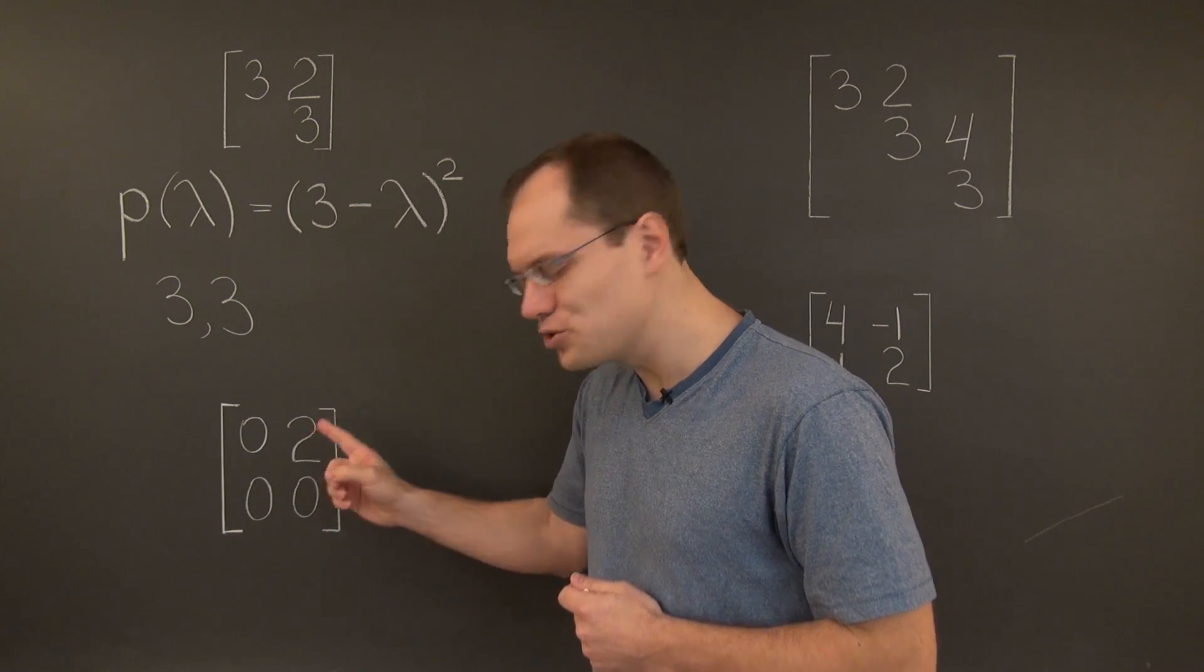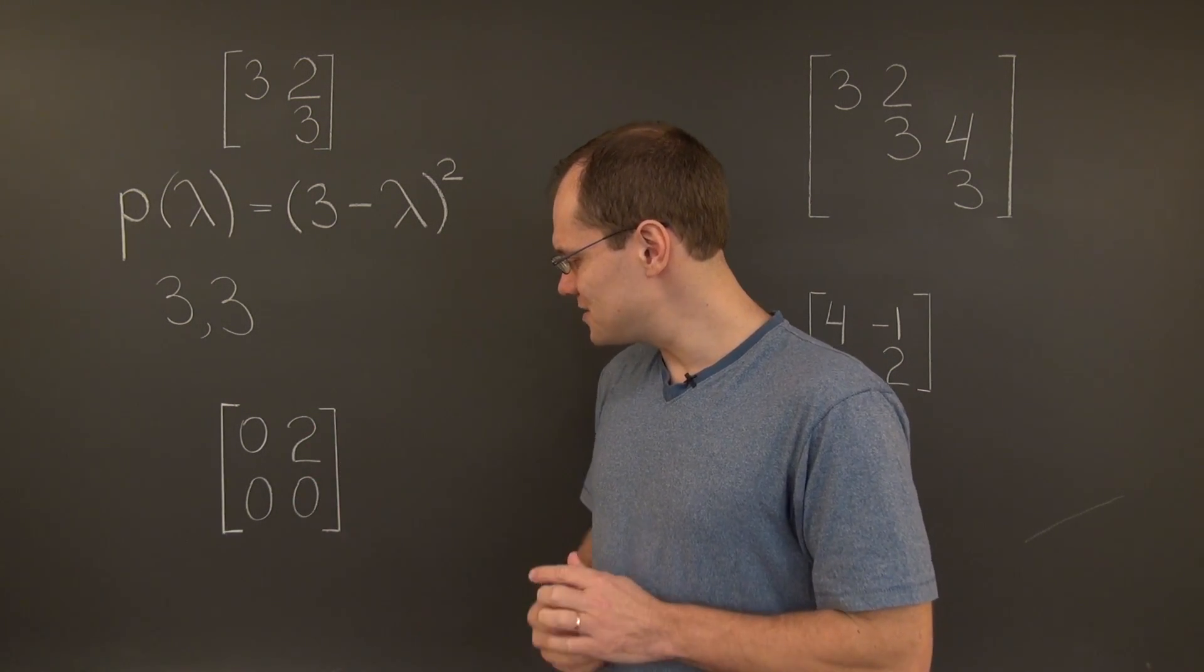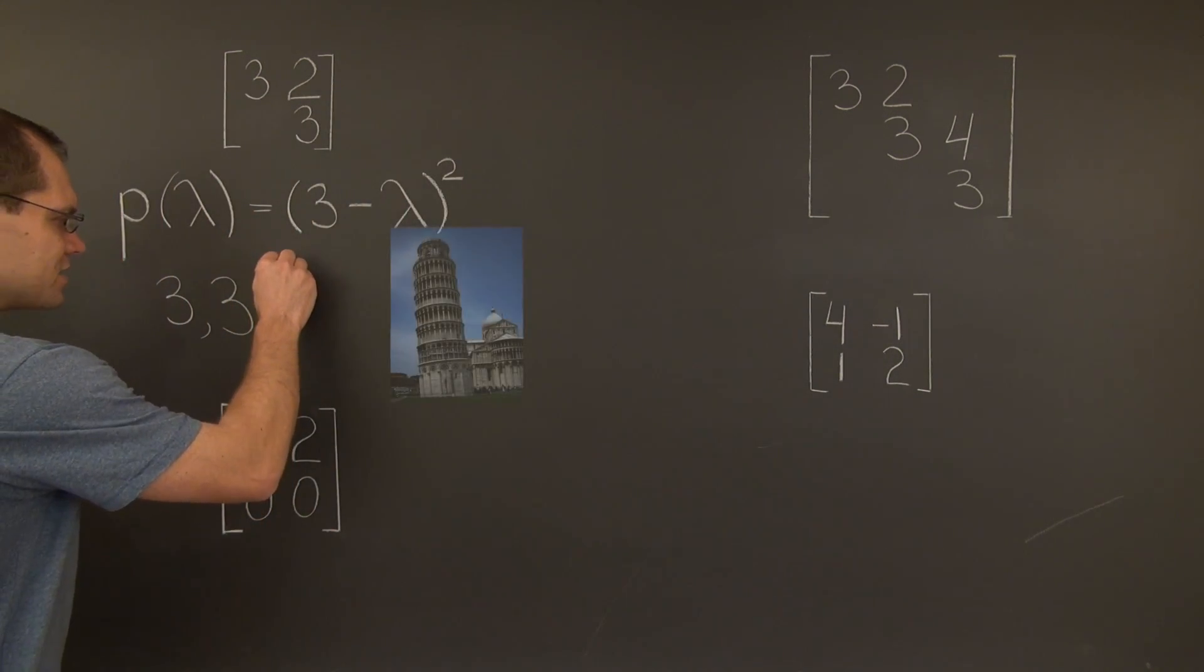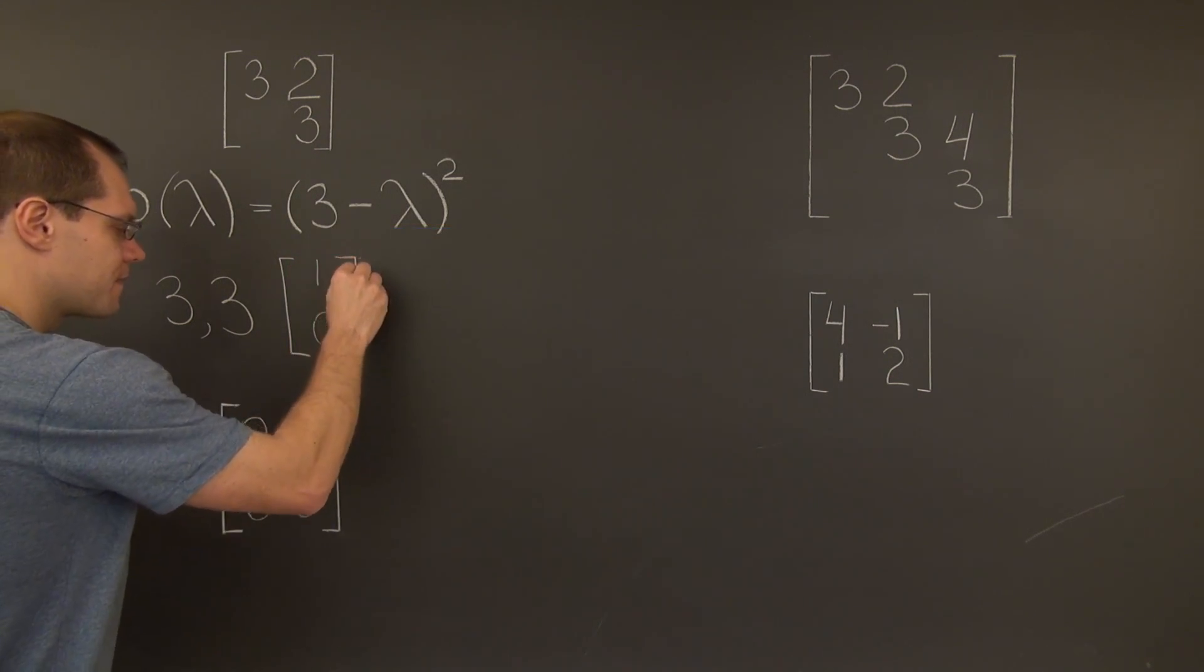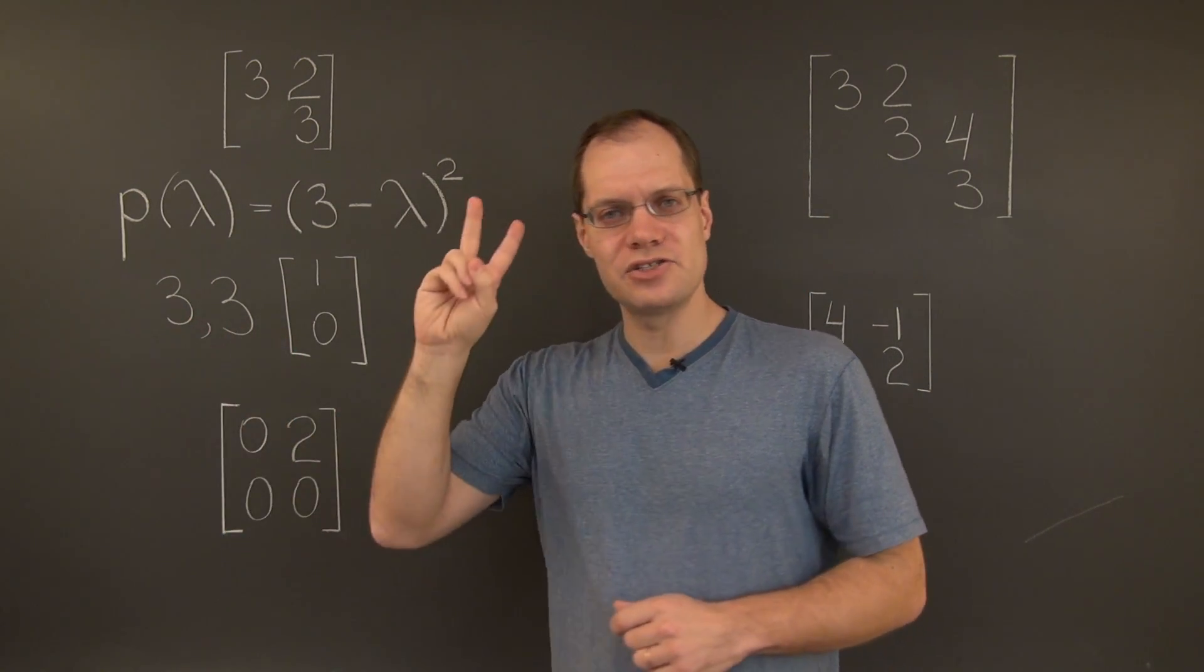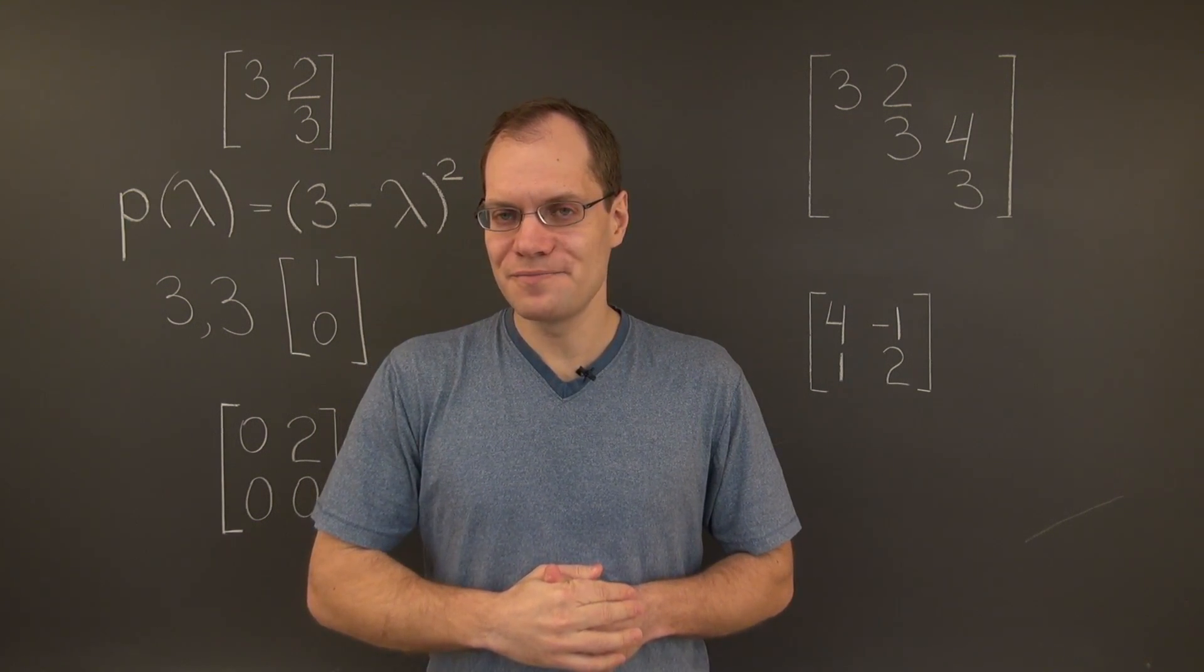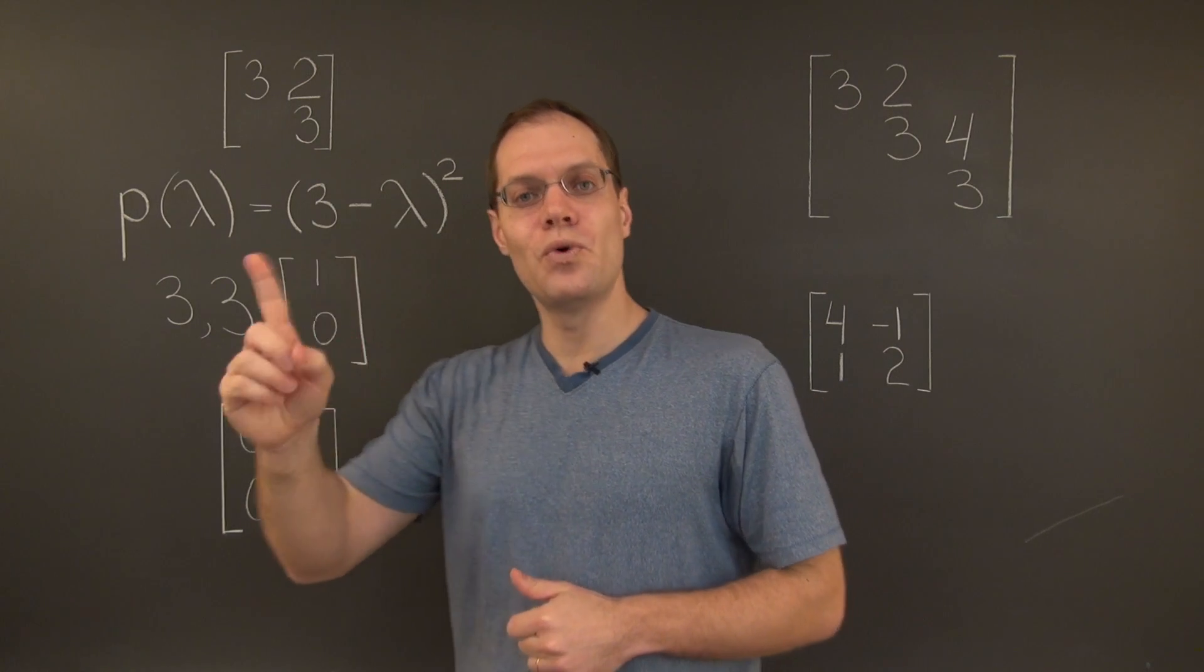And you can see that this 2 is the culprit. And so, the null space of this matrix is one-dimensional. More precisely, it is represented by the vector 1, 0. Thus, the algebraic multiplicity of this eigenvalue is 2. And the geometric multiplicity of this eigenvalue, which is the dimension of the corresponding eigenspace, is 1.